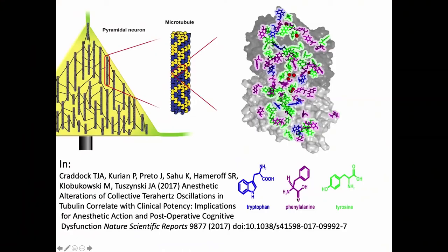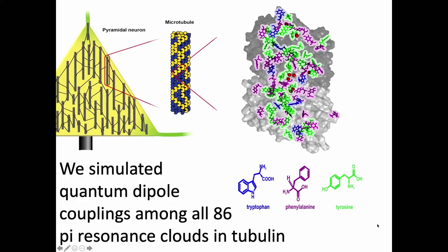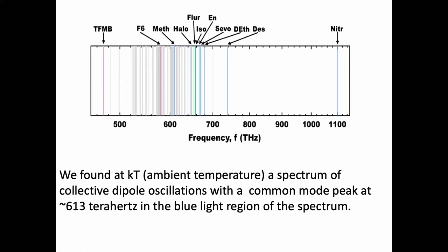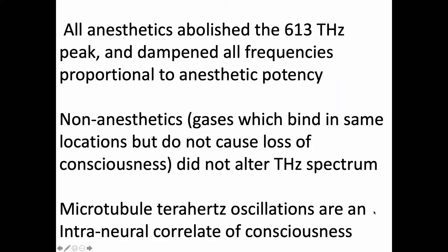Travis Craddock and colleagues, including myself, modeled tubulin, which has 86 aromatic amino acids — tryptophan, phenylalanine, and tyrosine — and also where the anesthetic molecules bind. We simulated quantum dipole couplings among all 86 and found a spectrum at room temperature (kT) of collective dipole oscillations with a common mode peak at about 613 terahertz, in the blue-green region of the spectrum. Adding anesthetics abolished the 613 terahertz peak and dampened all frequencies proportional to anesthetic potency. Microtubule terahertz oscillations are an intraneuronal correlate of consciousness.